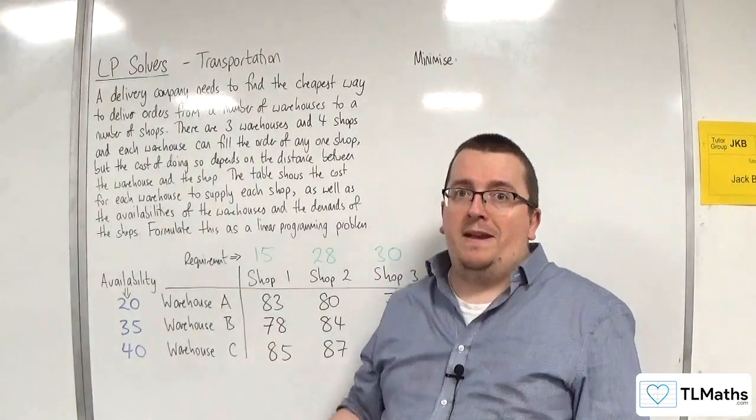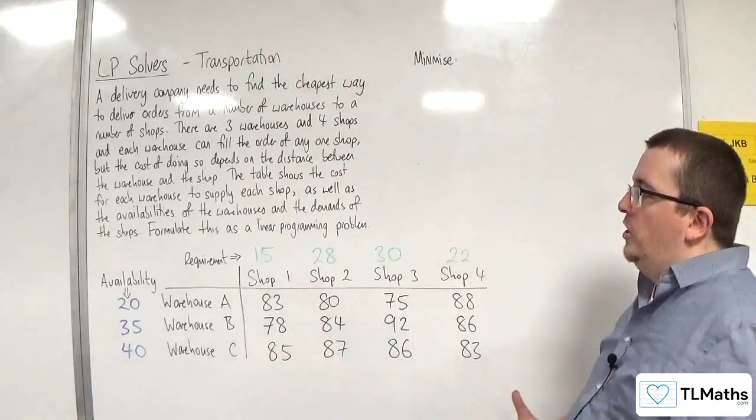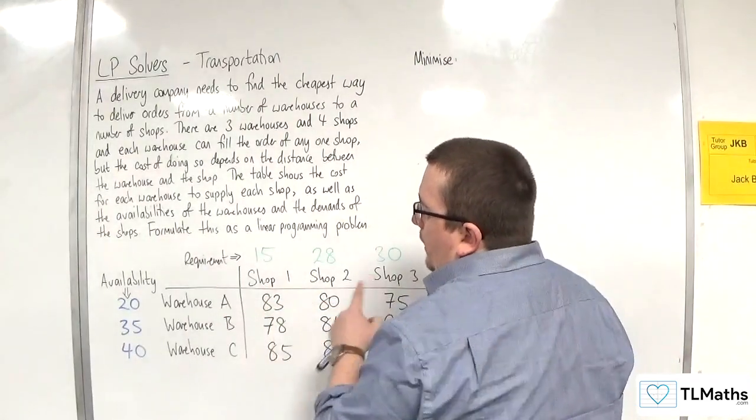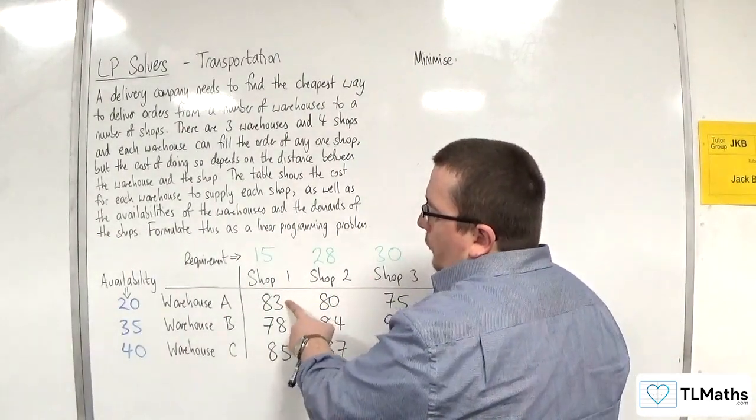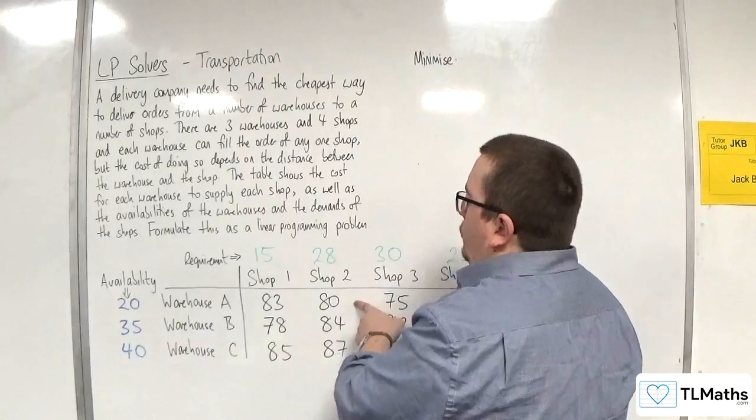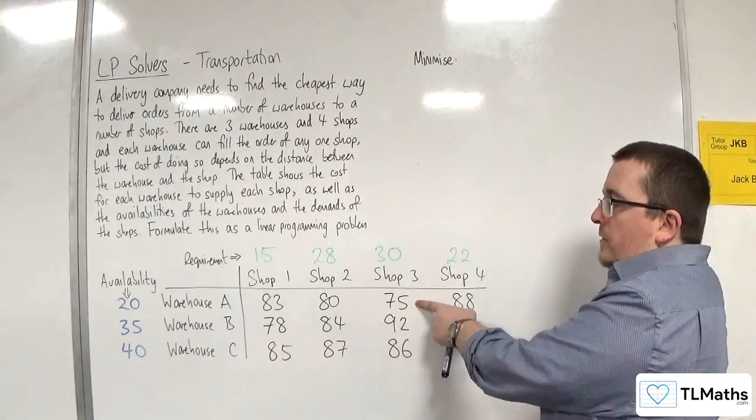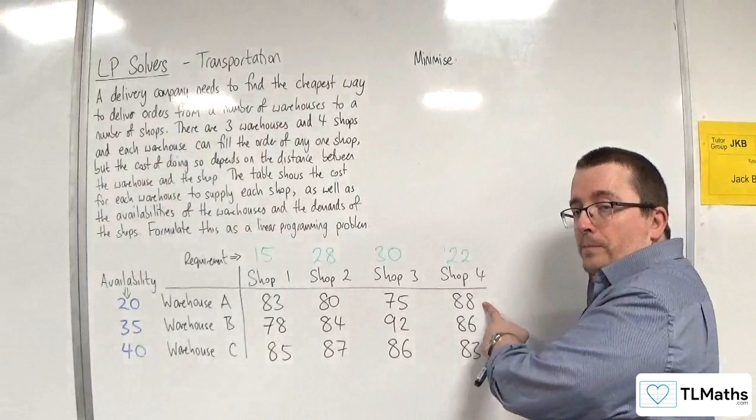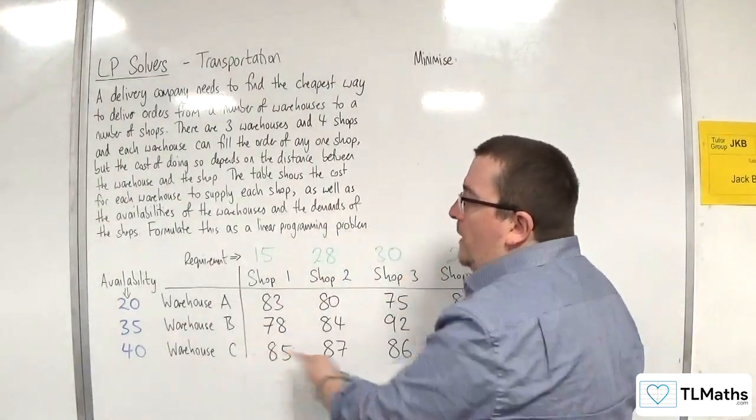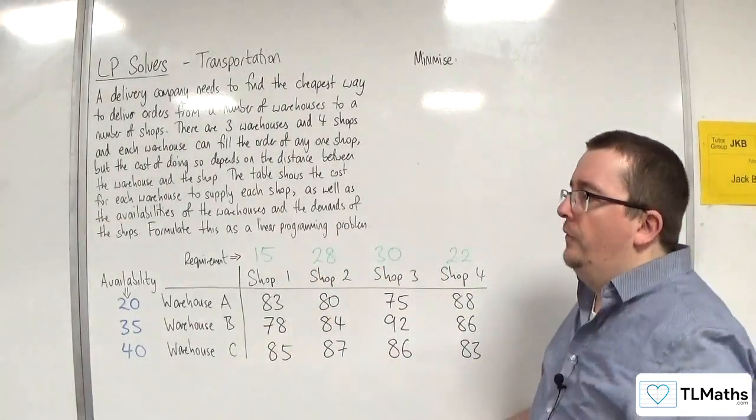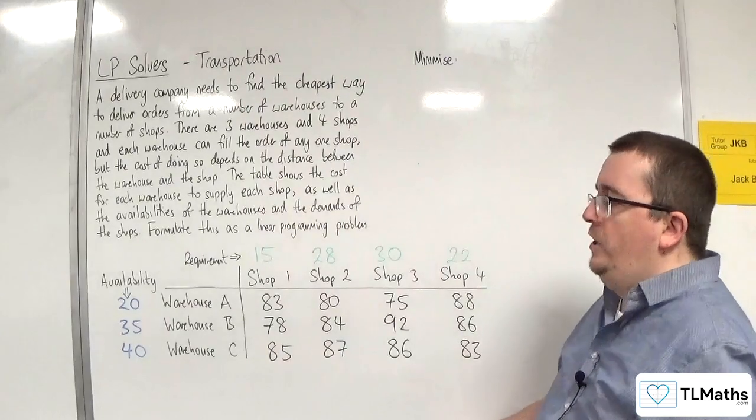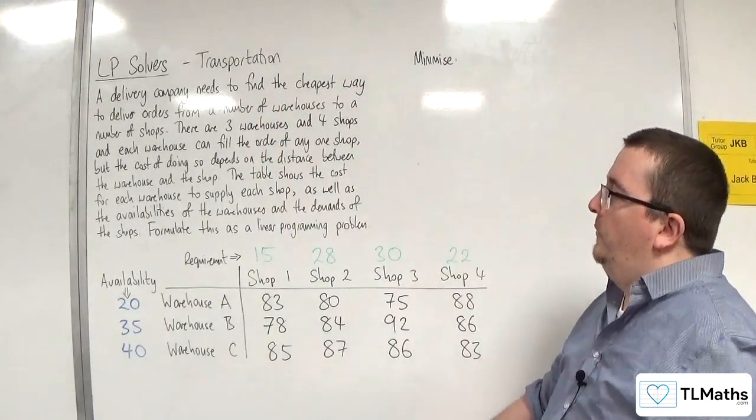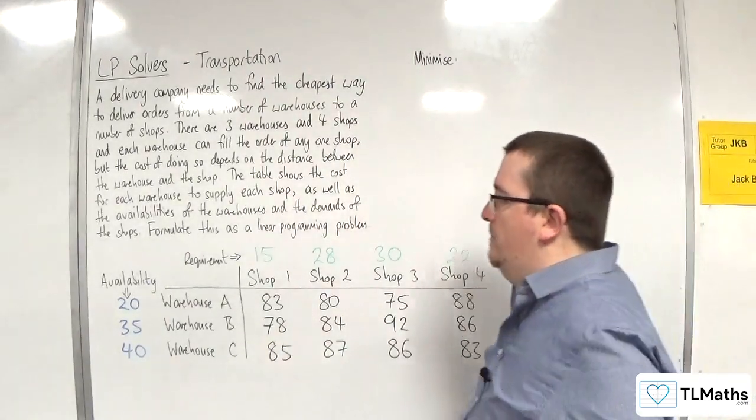Of course, we want all of these requirements to be met, and we also want to minimize the total cost. Each time I'm sending anything from warehouse A to shop one, it costs 83. To shop two, it costs 80. 75 to shop three. And 88 to shop four. So it's quite a complicated problem that's going on behind the scenes. It's certainly not one you'd want to do by hand.